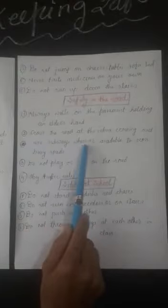Walk on pavement holding an elder's hand. Cross the road at the zebra crossing and use subways wherever available to cross busy roads.